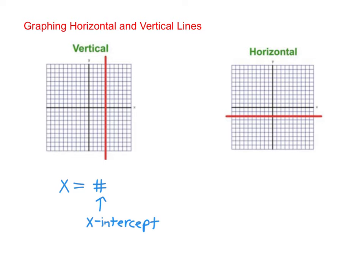Notice how this line here in this picture crosses the x-axis at 4. Since it's a vertical line with an x-intercept of 4, its equation would be x equal 4.